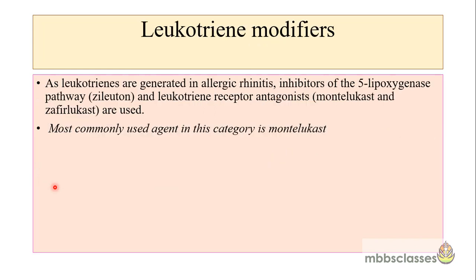The third group of drugs given in allergic rhinitis are the leukotriene modifiers. Since leukotrienes are generated in allergic rhinitis, inhibitors of the 5-lipoxygenase pathway such as zileuton and leukotriene receptor antagonists are used for treatment. The leukotriene receptor antagonist most commonly used is montelukast and zafirlukast. Montelukast is the most commonly used medicine for allergic rhinitis and is equally effective as antihistamines for the control of nasal and ocular symptoms.